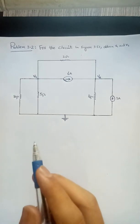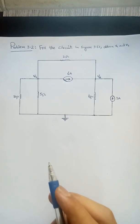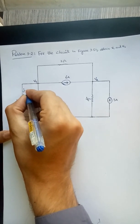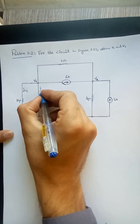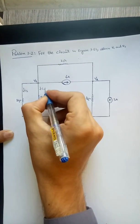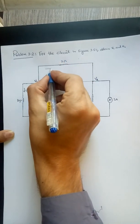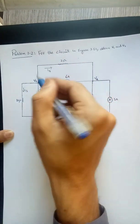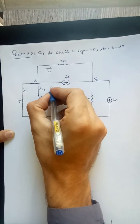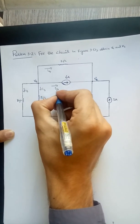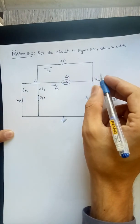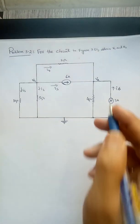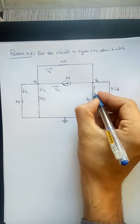So first we need to define and assign currents. Let's suppose I1, I2, I4. It's up to you, it can be I3, I4, let's have this one I3. Similarly, I6, and this one is I5.